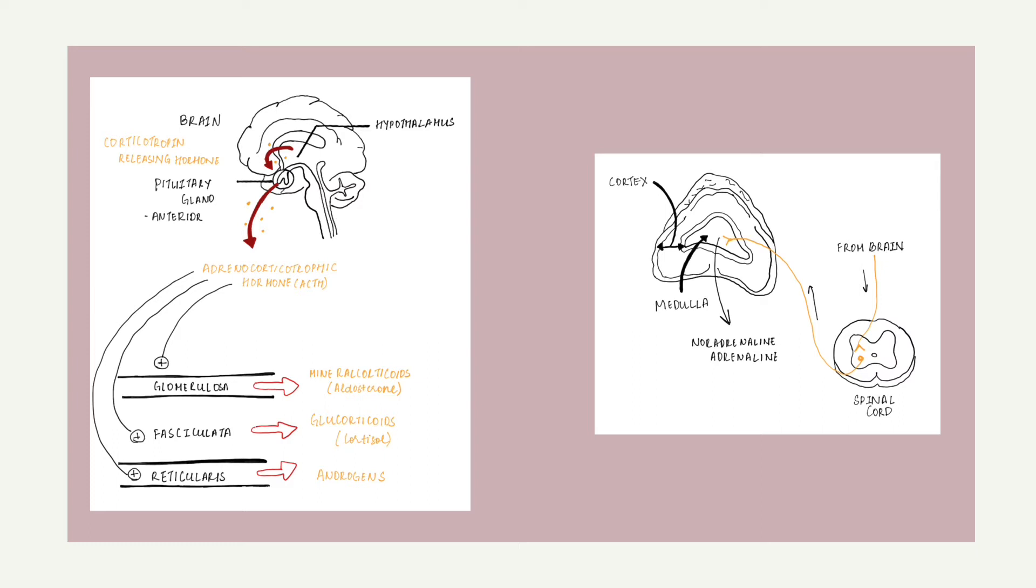Zona fasciculata produces the second class of hormones known as glucocorticoids, commonly known as cortisol. It regulates how the body converts fats, proteins, and carbohydrates to energy. It also helps regulate blood pressure and cardiovascular function.